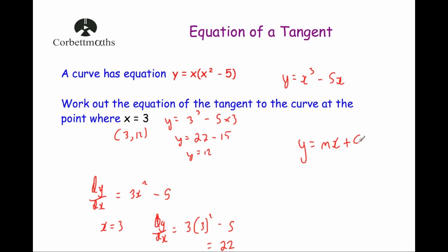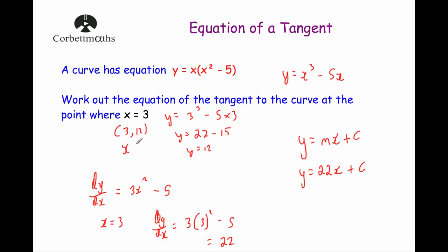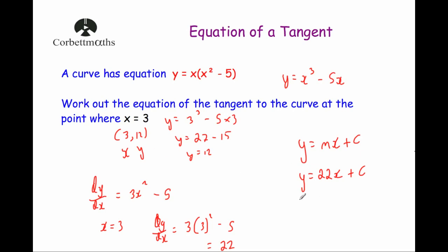The equation of the tangent is a straight line, so y equals mx plus c. We know the gradient is 22, so y equals 22x plus c. Now we need to find c by substituting in the point (3, 12): 12 equals 22 times 3 plus c. 22 times 3 is 66 plus c. Taking away 66 from both sides: 12 minus 66 is minus 54, so c equals minus 54. Therefore the equation of the tangent to the curve at the point where x equals 3 is y equals 22x minus 54.